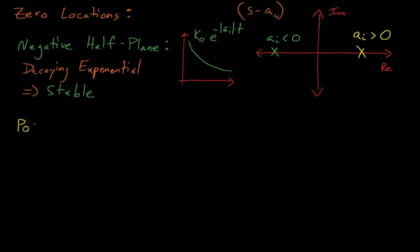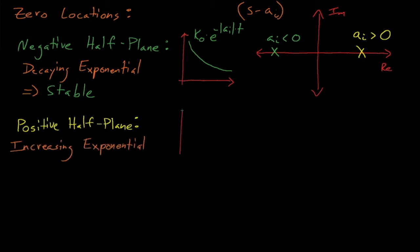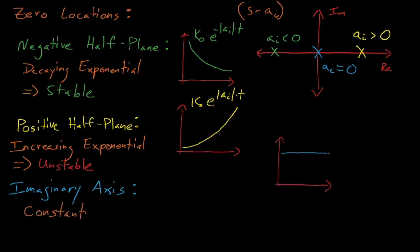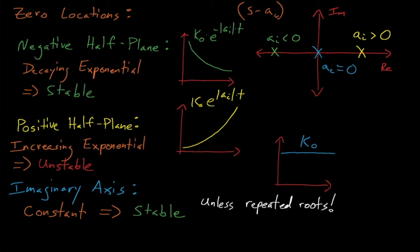Conversely, any zeros that are in the positive real half plane mean that our system's time domain solution will contain an increasing exponential e to the positive a t, which means that our system is inherently unstable. Any of our zeros that lie at the origin mean that our transfer function's partial fraction decomposition contains a 1 over s term, which becomes a constant function when converted into the time domain. In this case, our system's power is stable because it is constant over time and doesn't approach infinity. However, repeated zeros on the imaginary axis mean that our transfer function also contains a 1 over s squared term, which becomes a linear function t when converted back into the time domain. Because the system's power will increase linearly without bound over time, any repeated zeros on the imaginary axis will cause our system to become unstable.